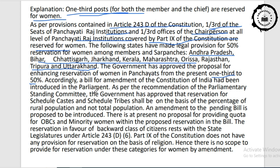As per the recommendation of the Parliament Standing Committee, the government approved that reservation for Scheduled Castes and Scheduled Tribes shall be on the basis of percentage of rural population, not total population. There is at present no proposal for providing quota for OBC and minority women within the proposed reservation in the Bill. The reservation for backward class citizens rests with the state legislature under Article 243D(6). Part 9 of the Constitution has no provision for reservation on the basis of religion.